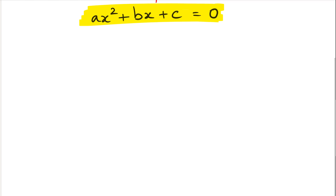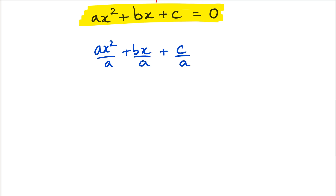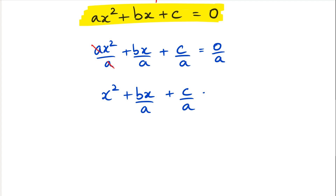The way we're going to set it up: the first thing we're going to do is get rid of the a in front of x², and that means we need to divide everything by a. So we have ax²/a + bx/a + c/a = 0/a. The two a's cancel out and we're left with x² + bx/a + c/a = 0.